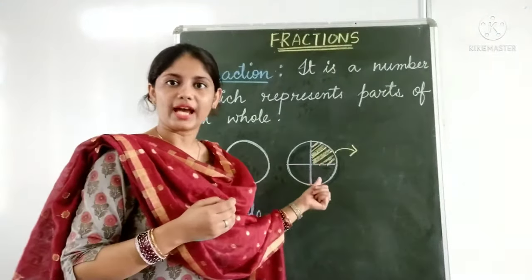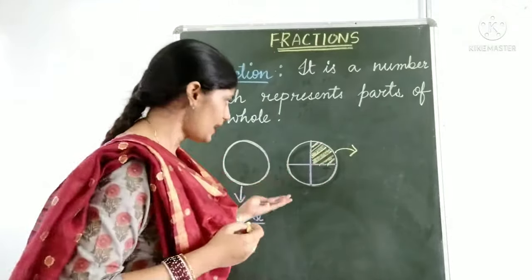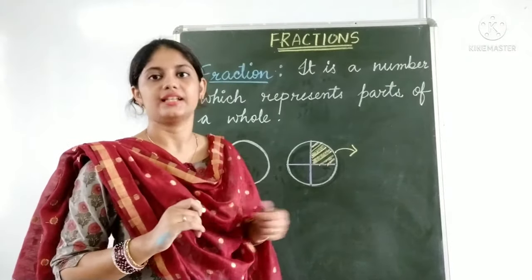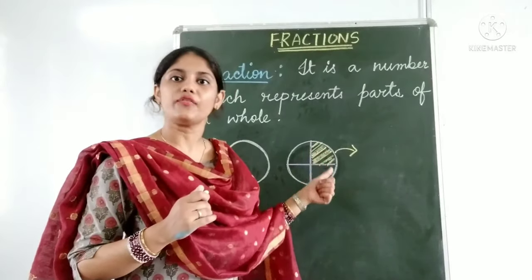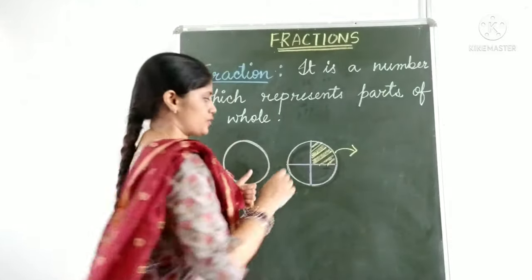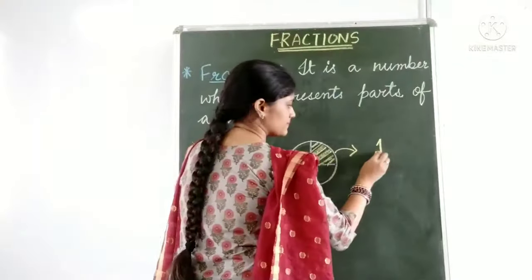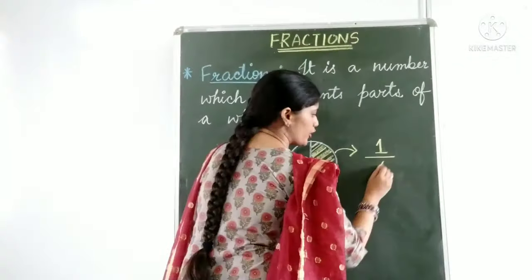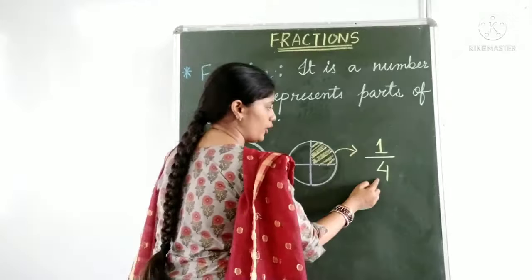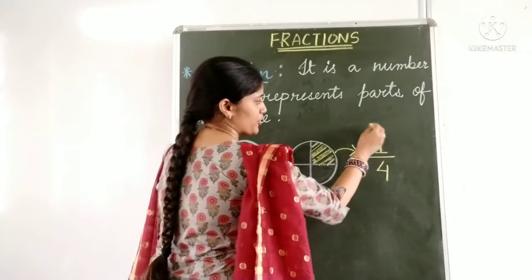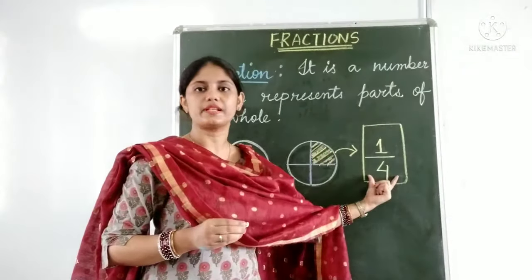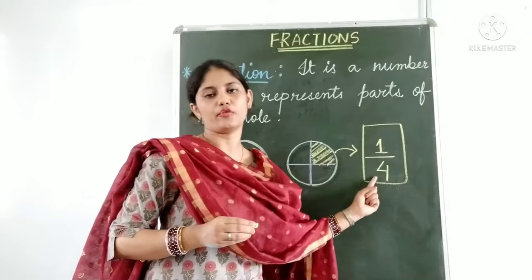Since we have four parts in this whole and I have shaded one part, if I write the fraction of the shaded portion, I will write: one part is shaded out of four parts. This four represents the whole and the one represents the shaded part. So this entire thing — one over four — is a fraction, a number which represents part of a whole.